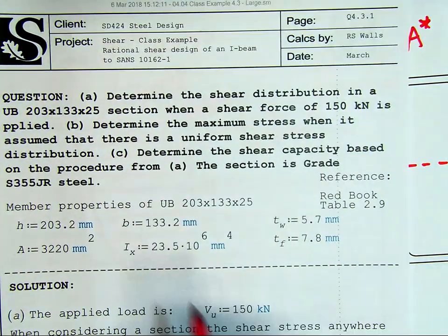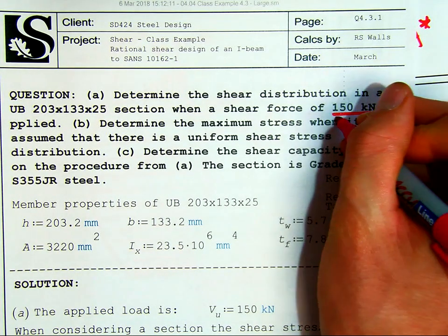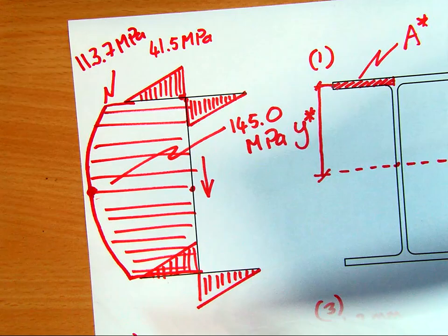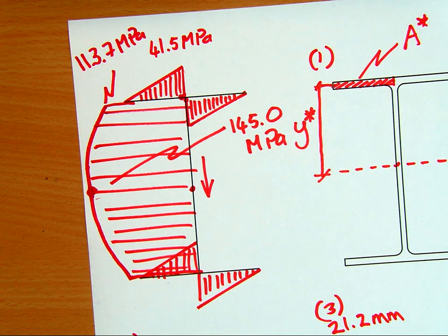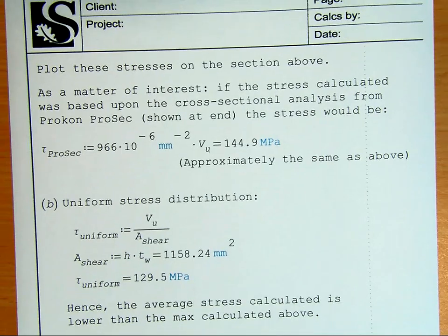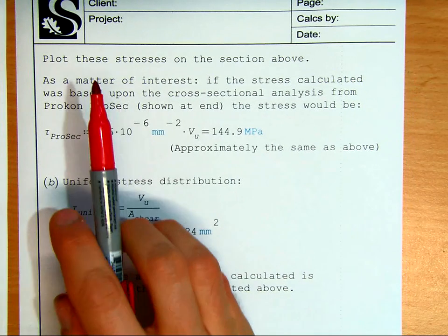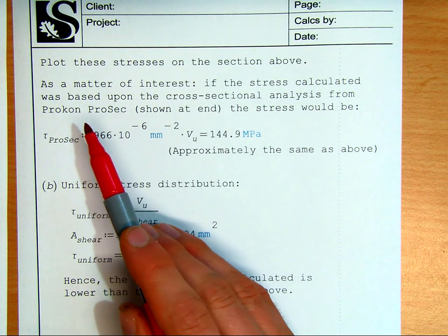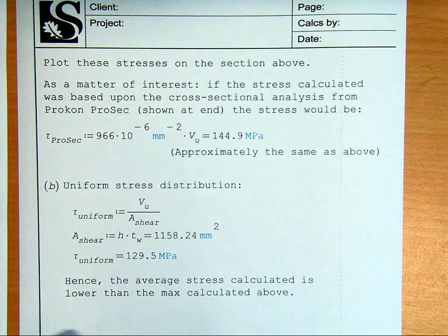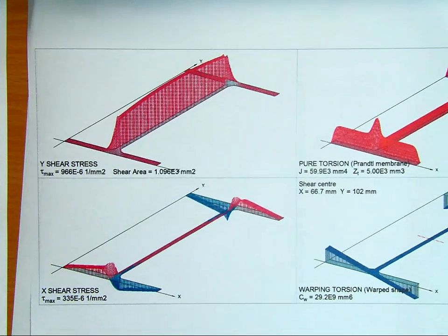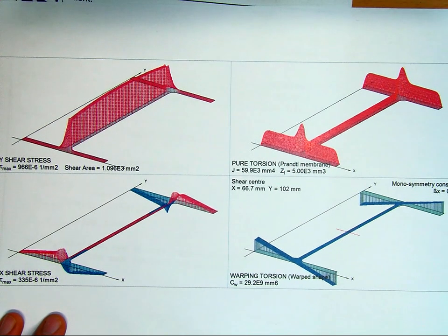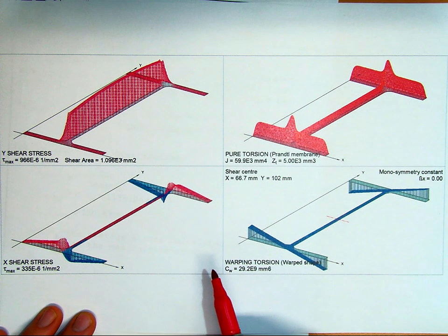But now, coming back to our question, we first had to determine the shear distribution for a specific force of 150 kN. But now, determine the maximum stress when we assume that there's a uniform shear stress distribution. This is a lot more straightforward when it comes to the calculations. Because all we need to do is assume a uniform stress. Right now, just the last thing before going there though, to the uniform stress, we plotted these stresses on the section above. As a matter of interest, if the stress calculated was based upon the cross section analysis for ProCon ProSec, you'll see that at the end of your notes, the stress would be.